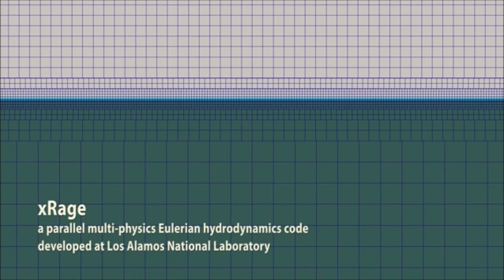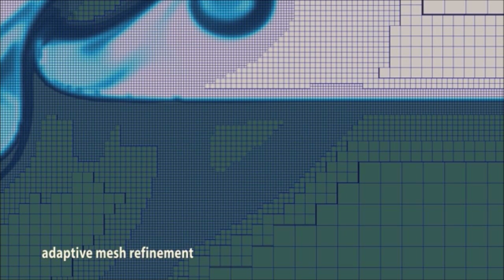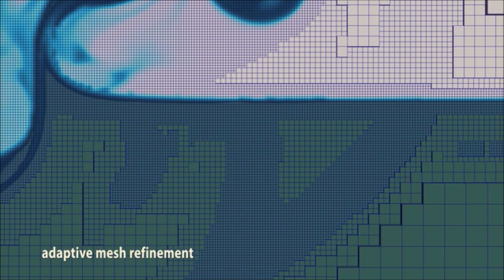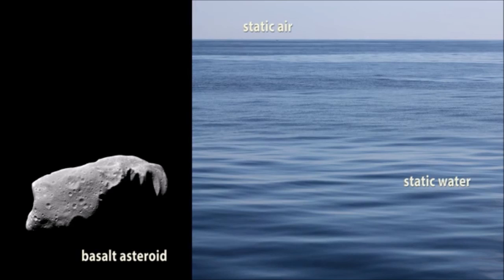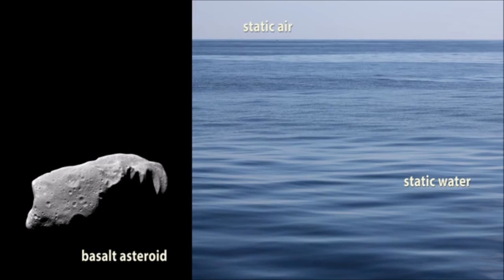We used XRAGE, a parallel multi-physics Eulerian hydrodynamics code. XRAGE uses adaptive mesh refinement to continually subdivide computational cells in important areas, applying more computing power to where it's needed. Our simulations contain three materials: a basalt asteroid, static air, and static water. Initially, all kinetic energy is assigned to the asteroid.